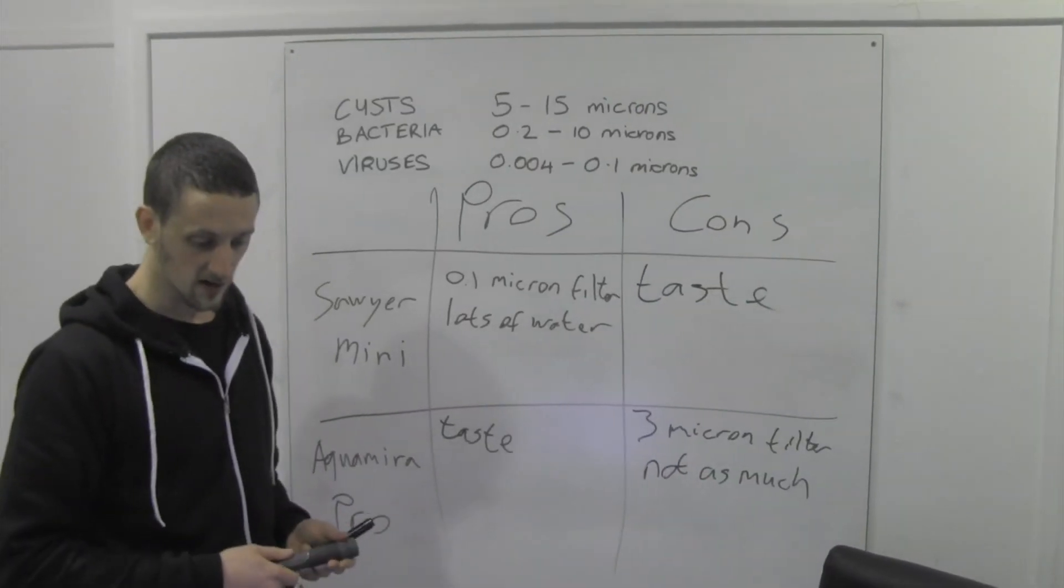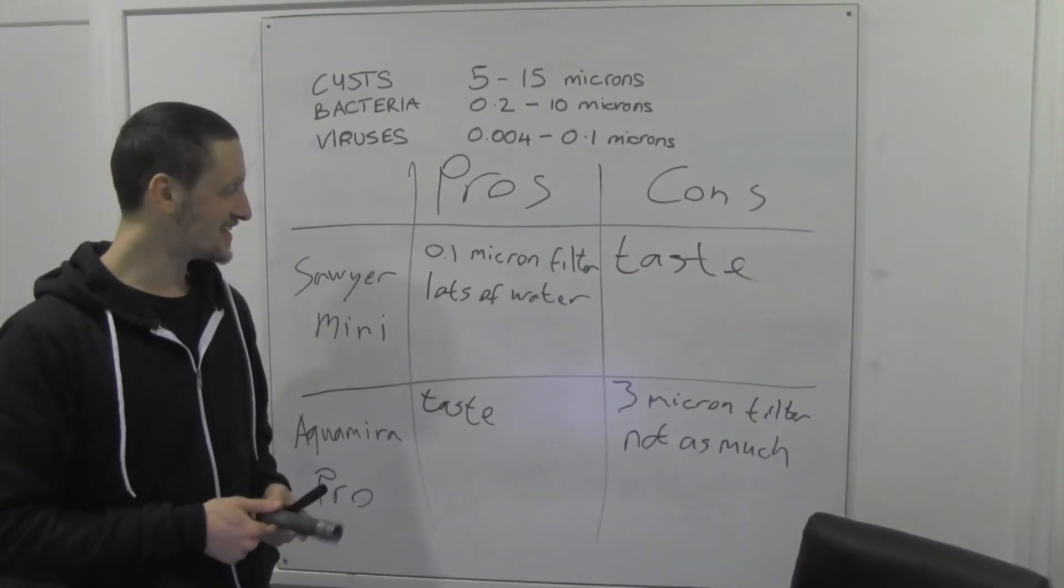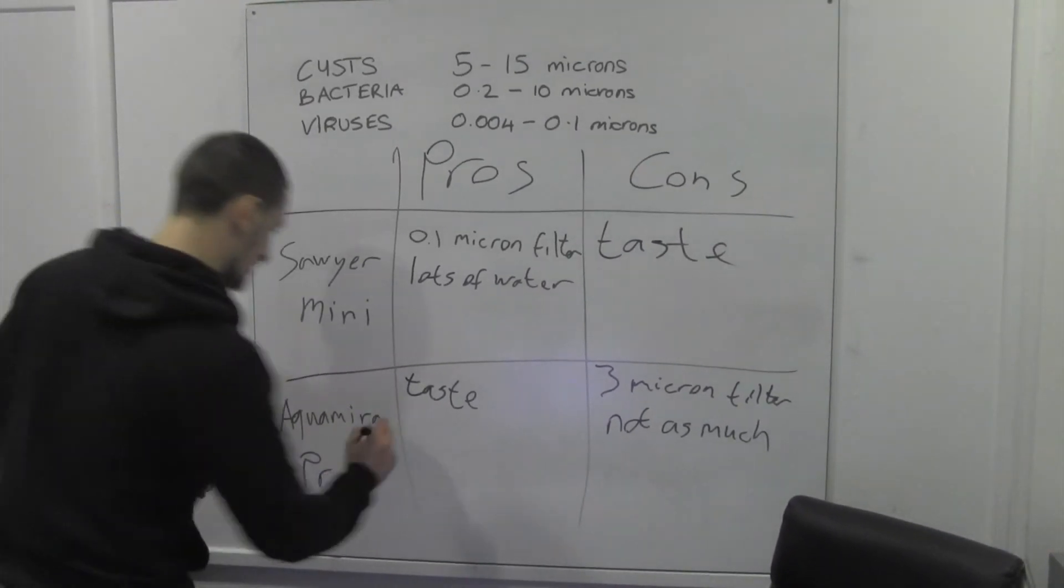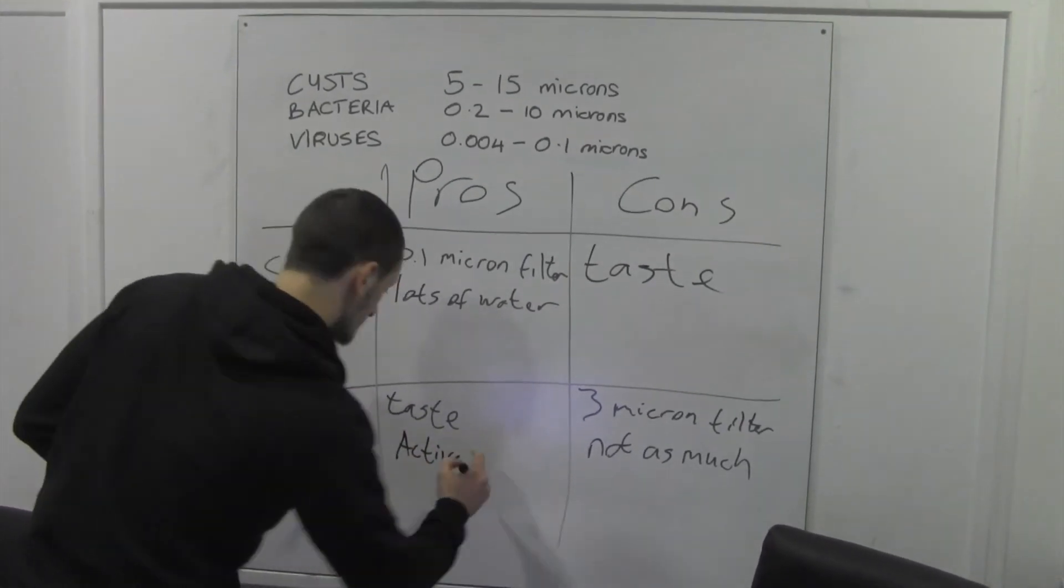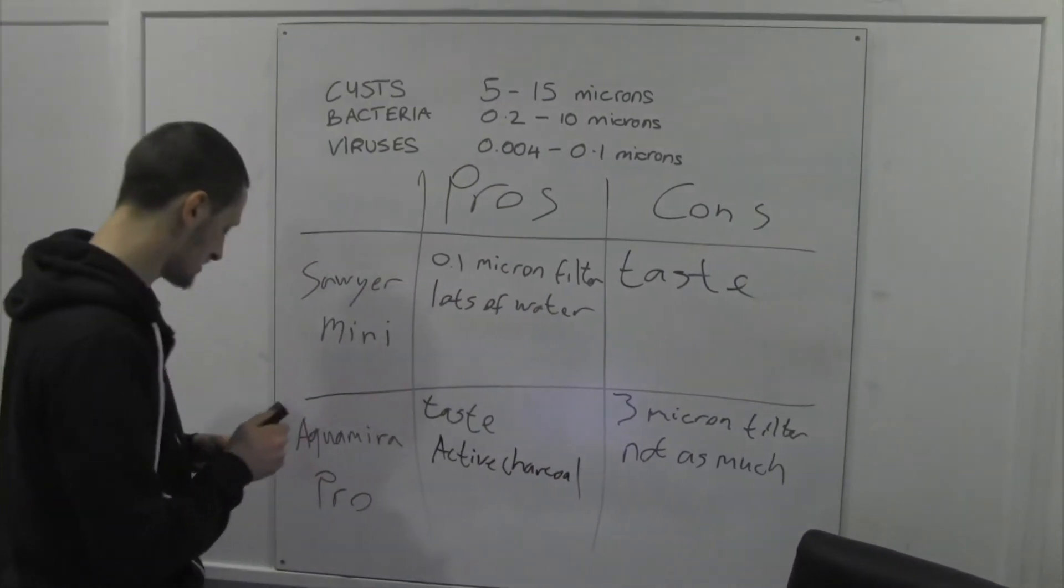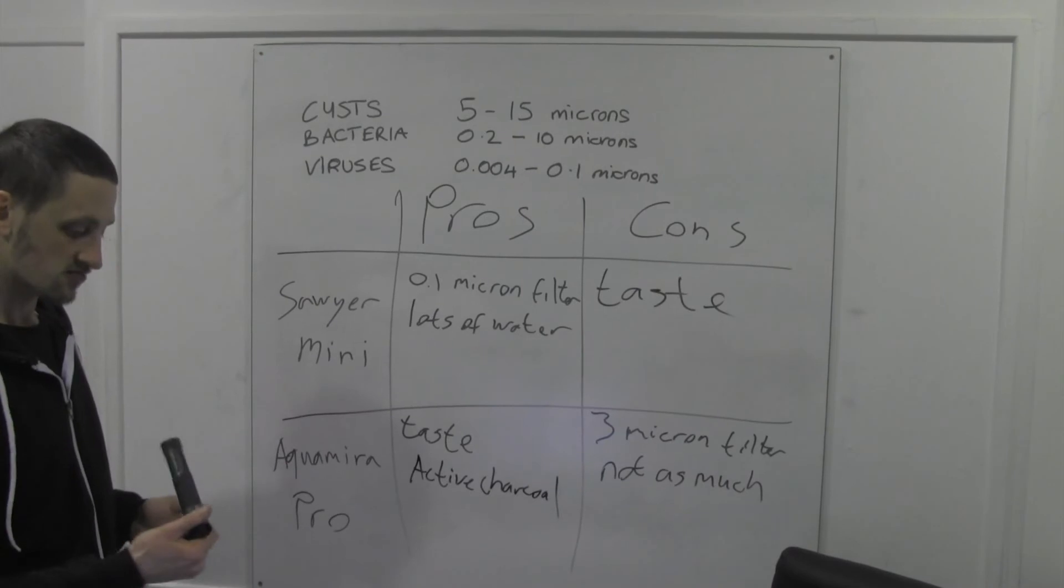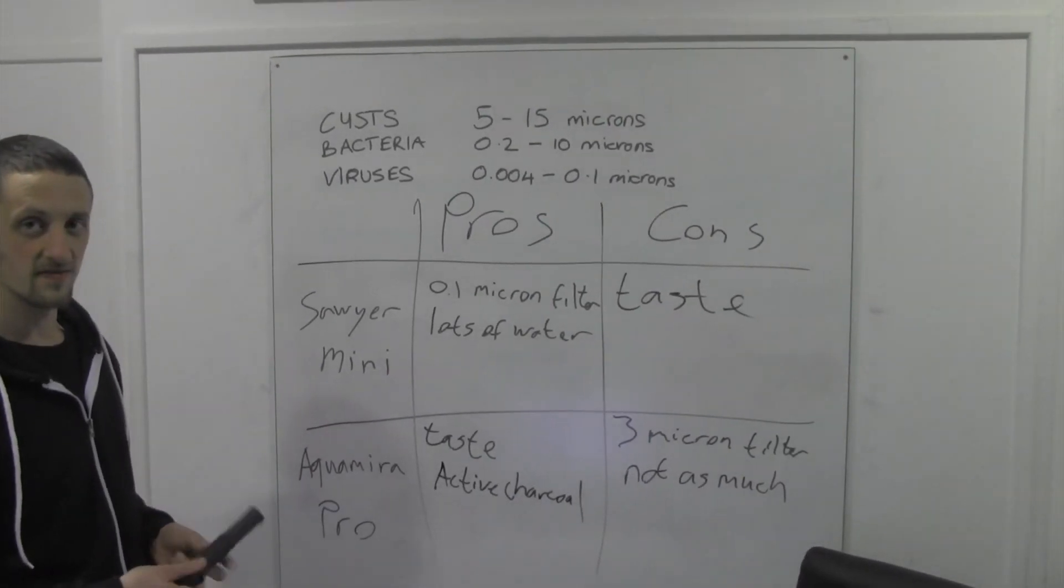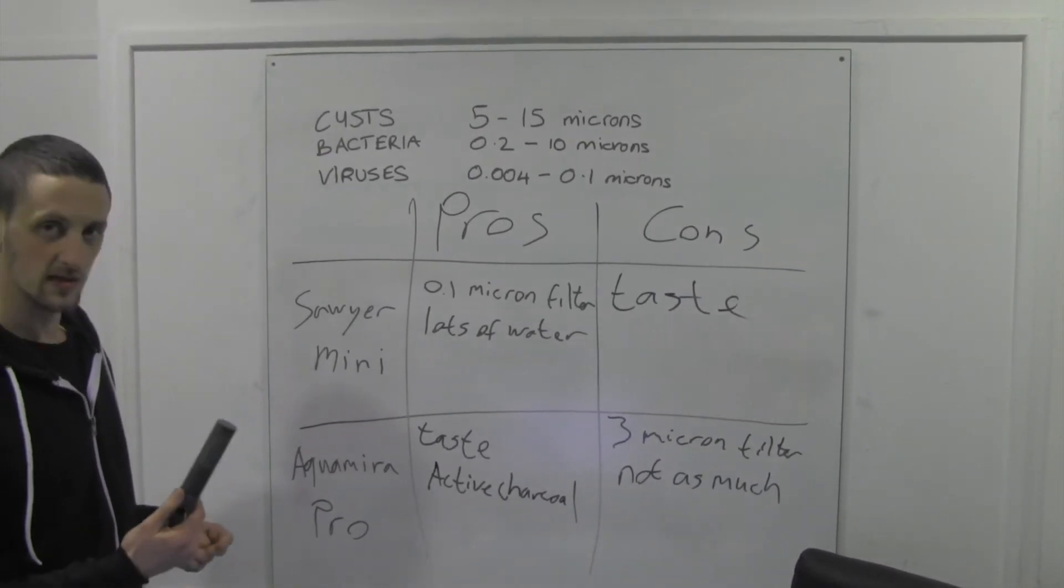Another pro of the Frontier Pro is it has an activated charcoal section to it. This is going to allow you to take out toxins, it improves taste. That's probably why it tastes so nice. Also going to deal with some of the chemicals. So, depending on the areas, this could be a better option. If you're going to China, the water over there is absolutely riddled with heavy metals. So this one will take care of it.